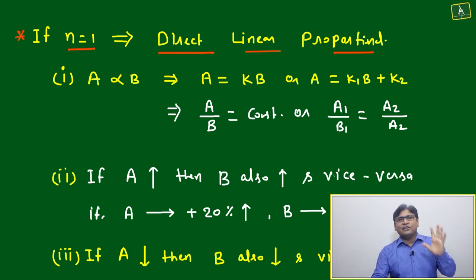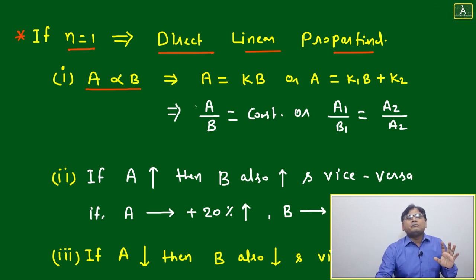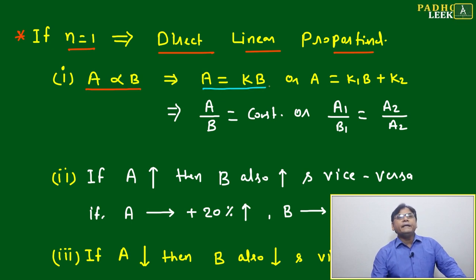Then directly we can write A is directly proportional to B. Two possibilities we are getting: either A equal to k into B or A equal to k1 B plus k2.